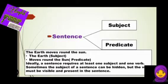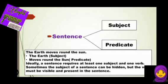So ideally a sentence requires at least one subject and one verb. Sometimes the subject of a sentence can be hidden, but the verb must be visible and present in the sentence. For example, 'do it.' In this sentence, the subject 'you' is hidden but the verb 'do' is visible.